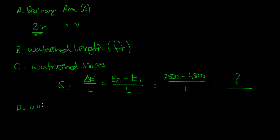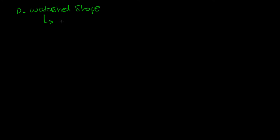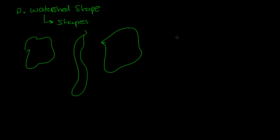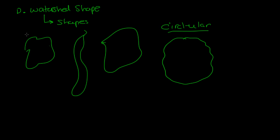The fourth characteristic is watershed shape. Watershed shape is important because it tells us several conceptual characteristics about the watershed. Watersheds come in many different shapes — they can be circular, elliptical, or many other forms. The two I want to focus on are circular and elliptical. In a roughly circular watershed, with the outlet at one point and rivers flowing toward it, all the flows reach the outlet at approximately the same time.